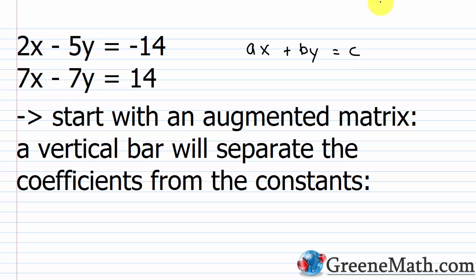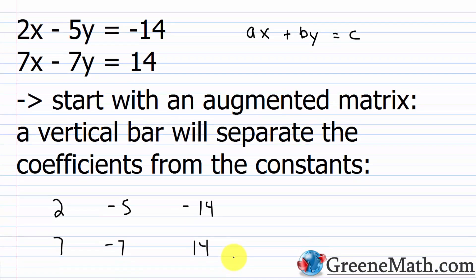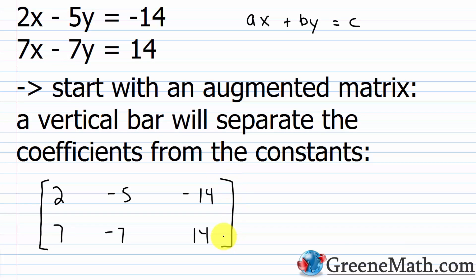To write the augmented matrix, we take the numerical information only. The coefficient for x is 2, the coefficient for y is negative 5, and the constant is negative 14 — that's the first row. The second row has 7 for x, negative 7 for y, and positive 14 as the constant. We use a vertical bar to separate the coefficients from the constants.